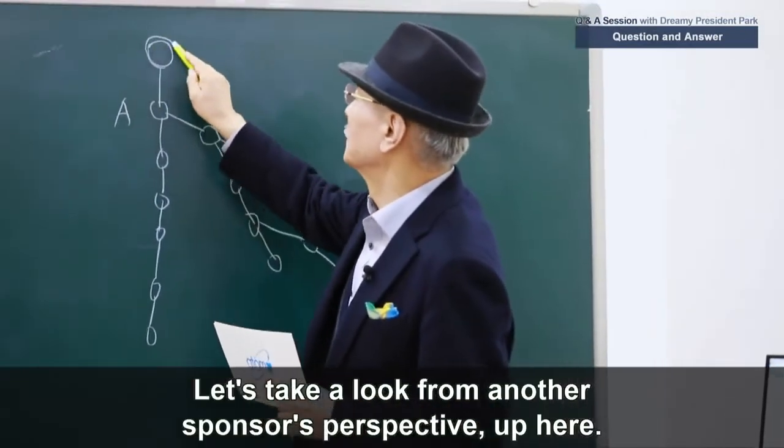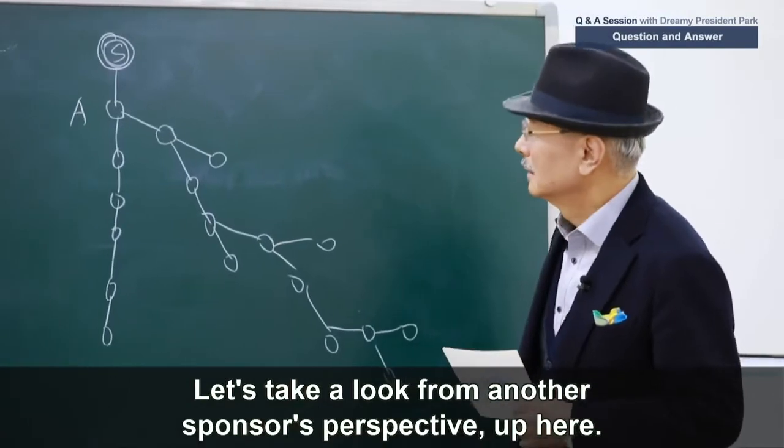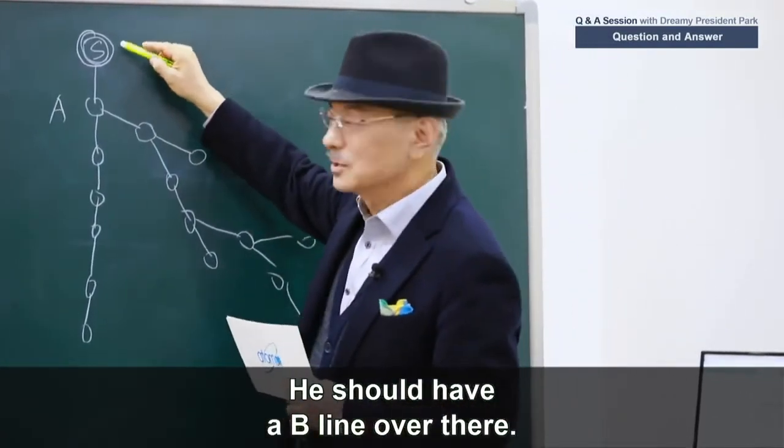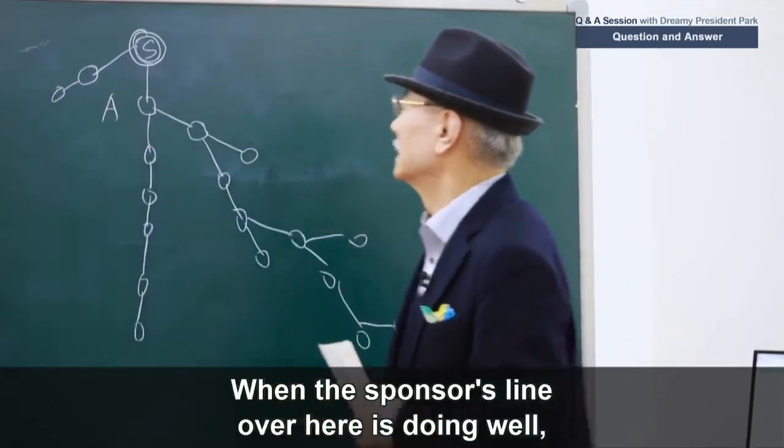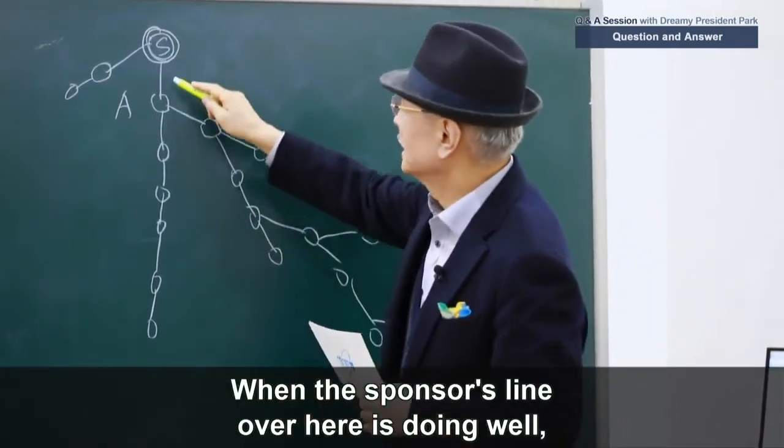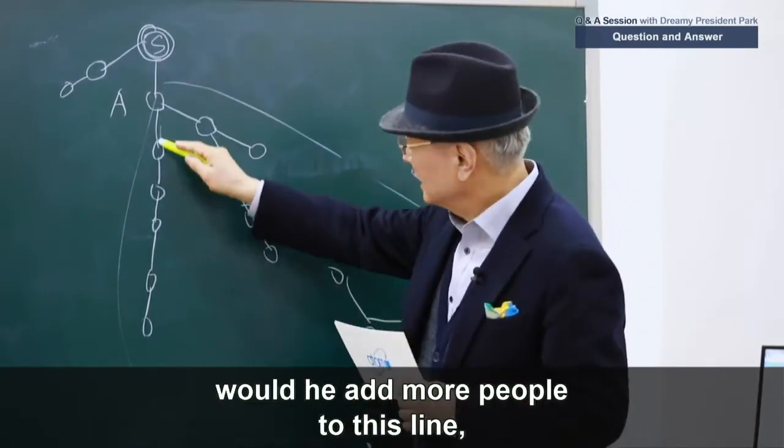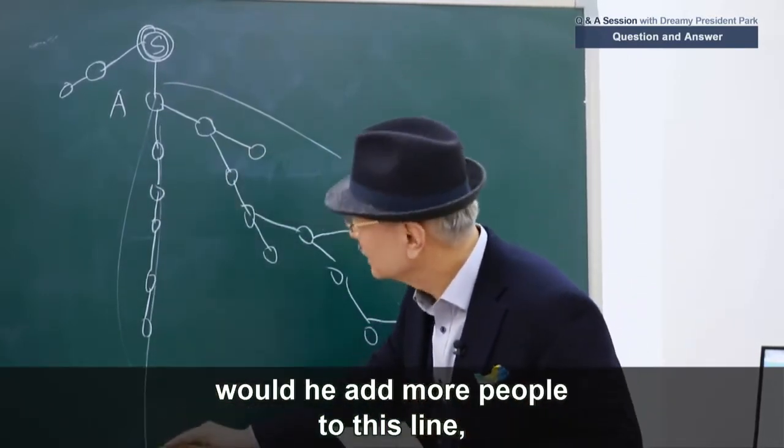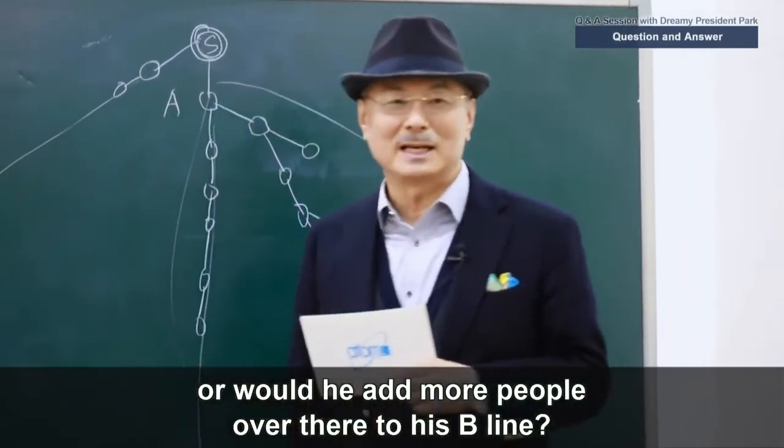Let's take a look from another sponsor's perspective up here. He should have a B-line over there. And sure, his B-line is formed like this. When the sponsor's line over here is doing well, would he add more people to this line? Or would he add more people over there to his B-line?